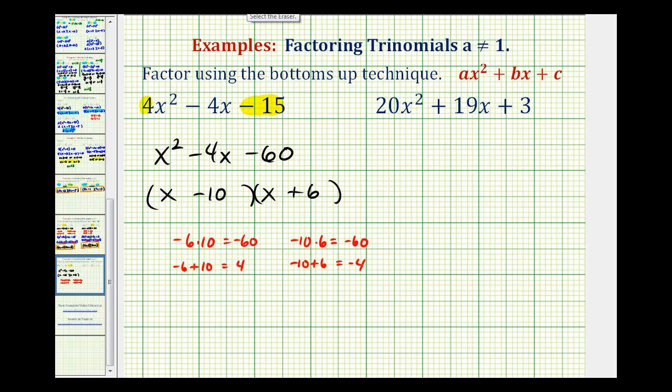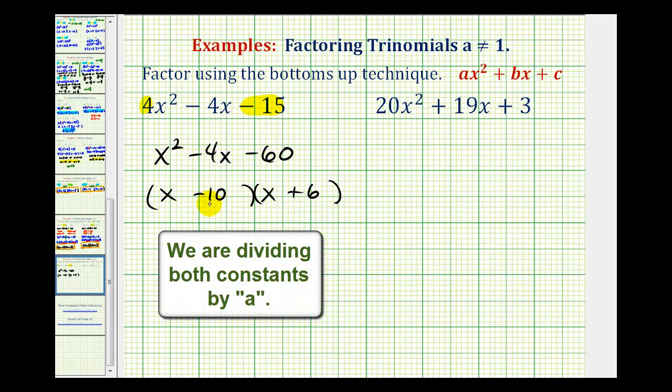Now we need to be careful here because we're not done. Since we multiplied negative fifteen by four to get this negative sixty, we're going to divide both constant terms of the binomial factors by four.